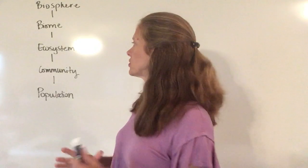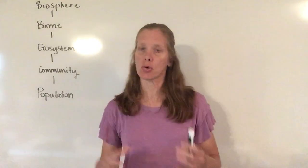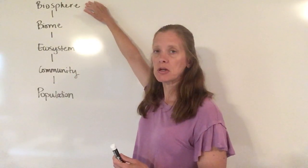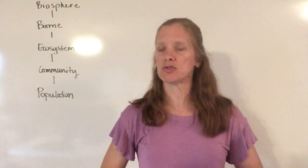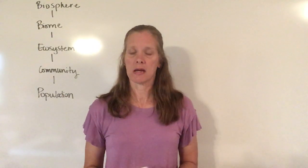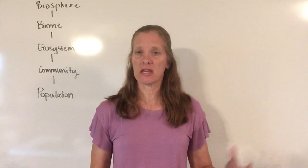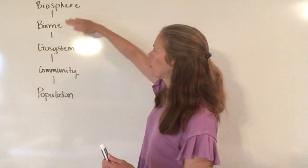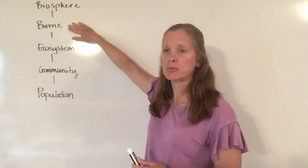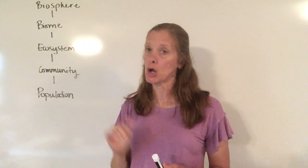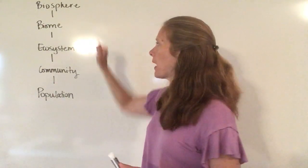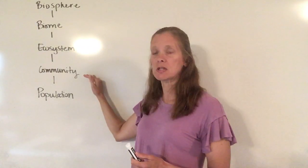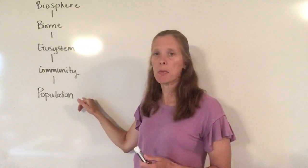There are five words in the correct order for how we're breaking things down. We start with the word biosphere, and the biosphere really includes the entire earth — everything within it, everything that is living and everything that is non-living. Within the biosphere, it is then broken down into a different number of biomes. Biomes are broken down into ecosystems, which are then broken down into communities, which are broken down into populations.